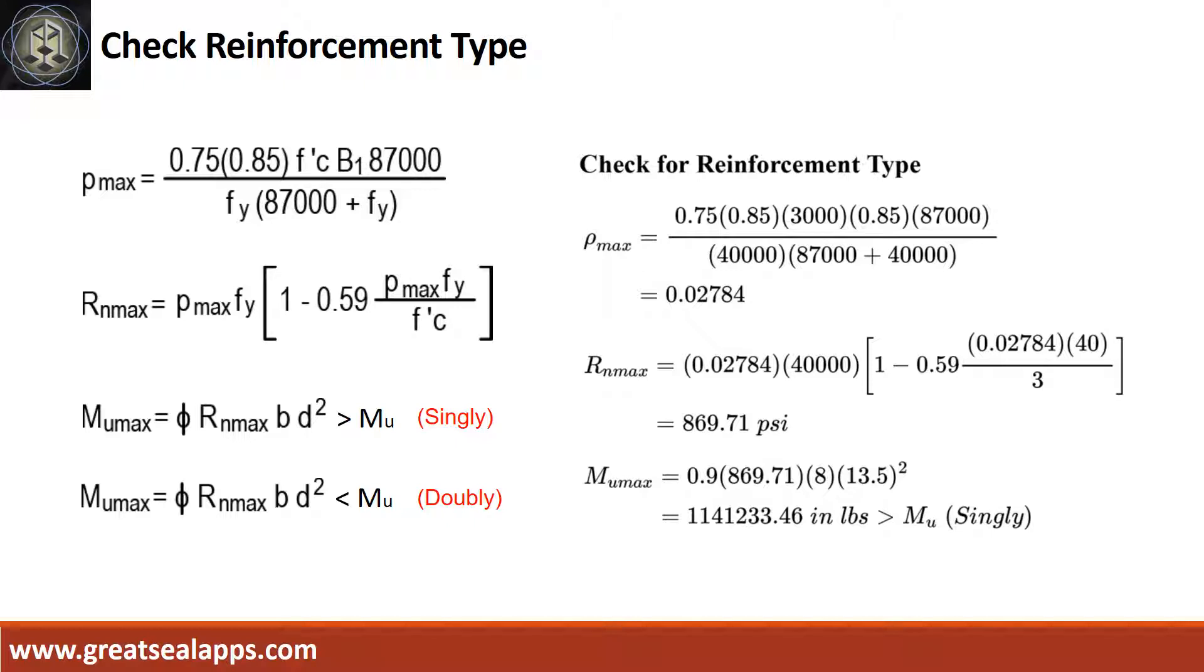Then the maximum concrete beam design ratio Rn max equals 869.71 psi. Followed by maximum moment from given section, Mu max equals 1,141,233.46 inch pounds, which is greater than the maximum design moment Mu.